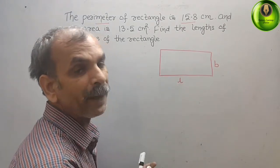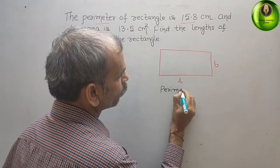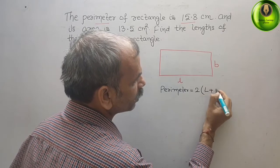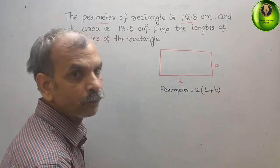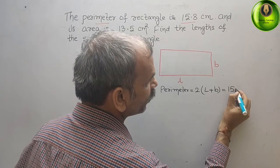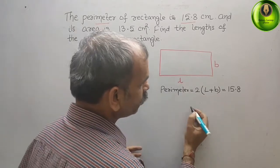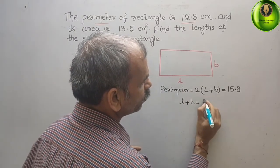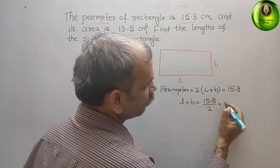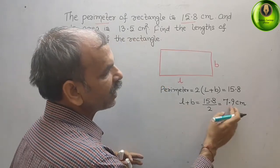What is the formula for a perimeter? Perimeter is equal to what? 2 into L plus B. They have given you 15.8 cm. This is equal to 15.8. Now, divide it. What you will get, L plus B is equal to 15.8 divided by 2. That is equal to what? We can say, it's 7.9 cm. L plus B is 7.9 cm.